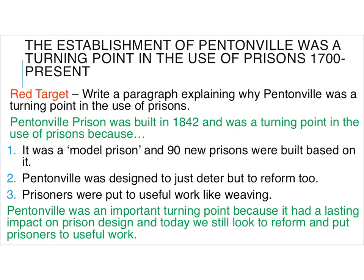Okay, so now we're looking at Pentonville as a turning point in the use of prisons — this is the essay question. The red target is to write a paragraph explaining why Pentonville was a turning point in the use of prisons. You've either got this target because you didn't write about Pentonville at all, or you wrote about it a bit but didn't write a proper paragraph linked to the question at the beginning and at the end — those bits in green are where I've done that. I've given you three reasons why it would be a turning point, then linked it back to the question. So write your red paragraph, or if you've written a bit about it, it might just be easiest to rewrite the paragraph and focus it at the start and end.